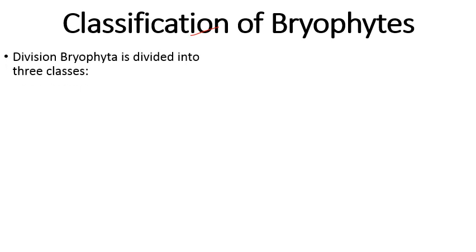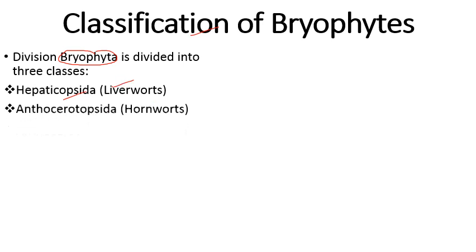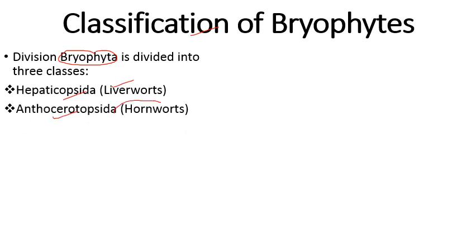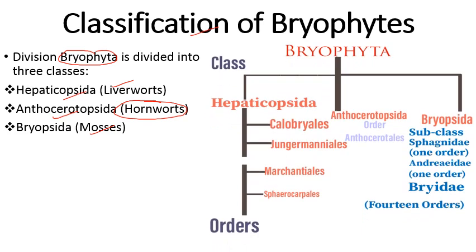Division Bryophyta is broadly divided into three classes: Hepaticopsida (liverworts), Anthocerotopsida (hornworts), and Bryopsida (mosses). Hepaticopsida consists of orders: Calobryales, Jungermanniales, Marchantiales, and Sphaerocarpales. Anthocerotopsida has one order: Anthocerotales. Bryopsida is further divided into subclasses and orders.